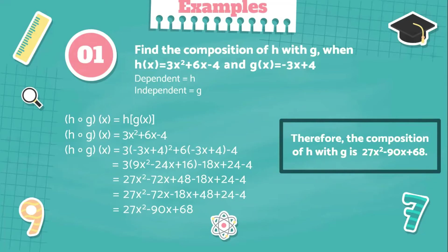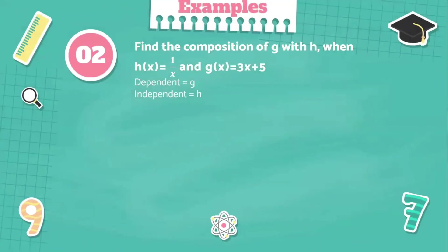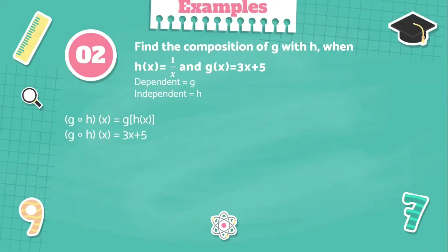Example number two: find the composition of g with h when h of x is equal to 1 over x and g of x is equal to 3x plus 5. In this example, our dependent function is g and our independent function is h. Solution: g circle h of x equals g of h of x. Now we're going to write our dependent function, which is g, and that is 3x plus 5.